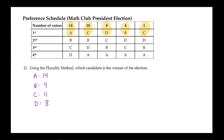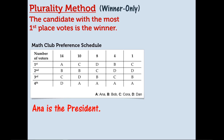So the winner of this election would be Anna. Anna would be the president using the plurality method.